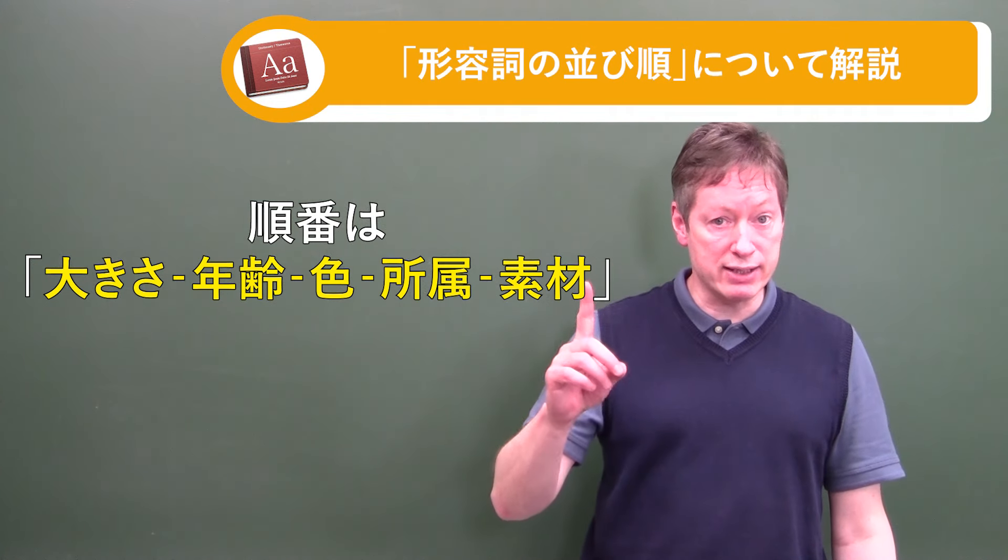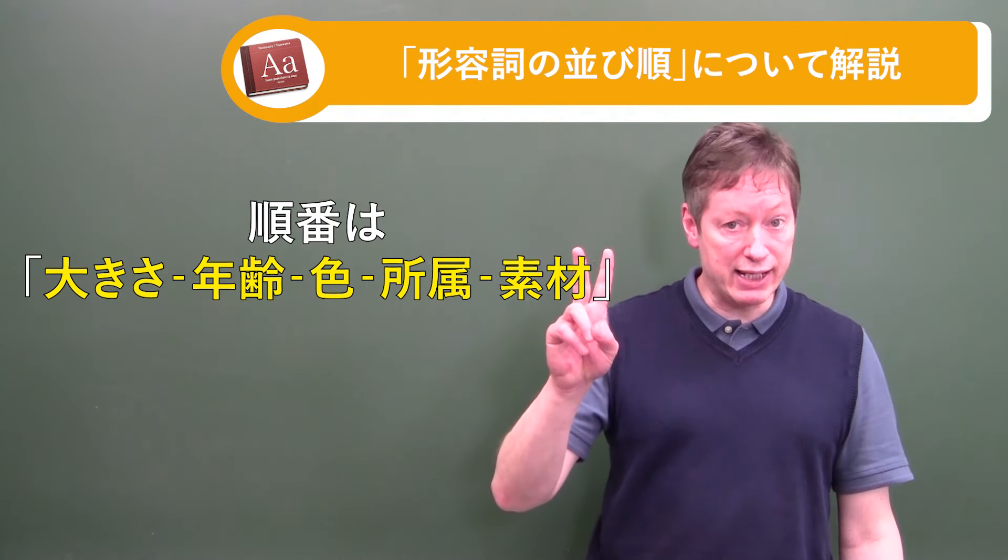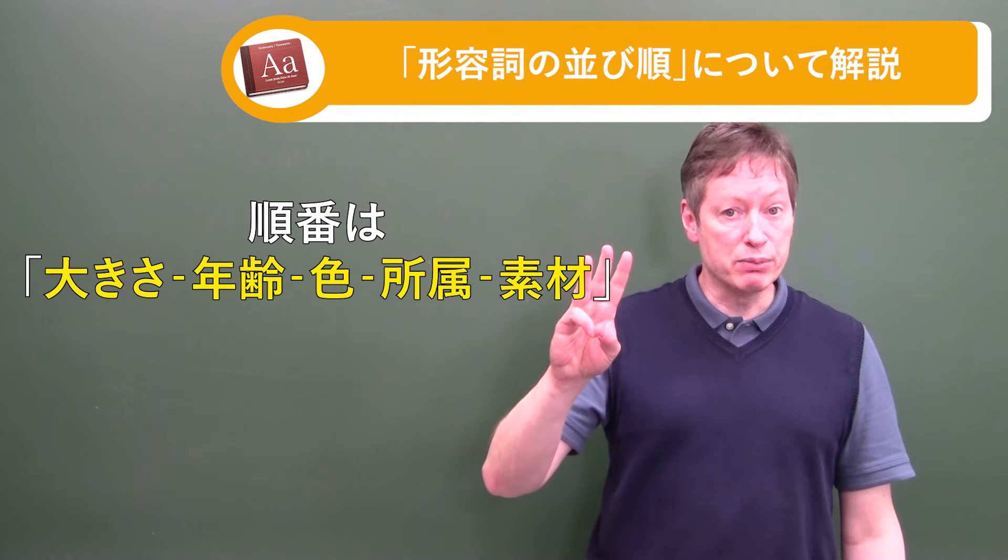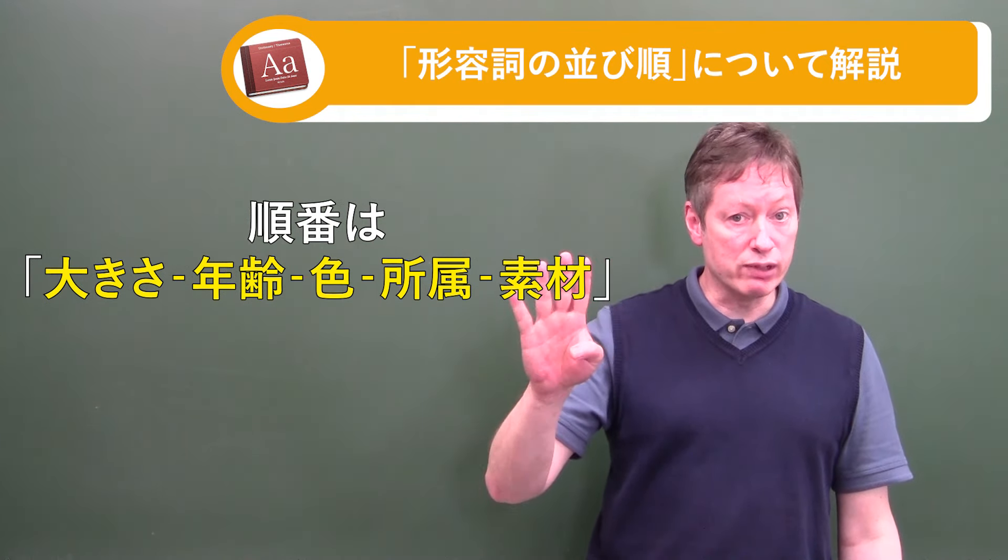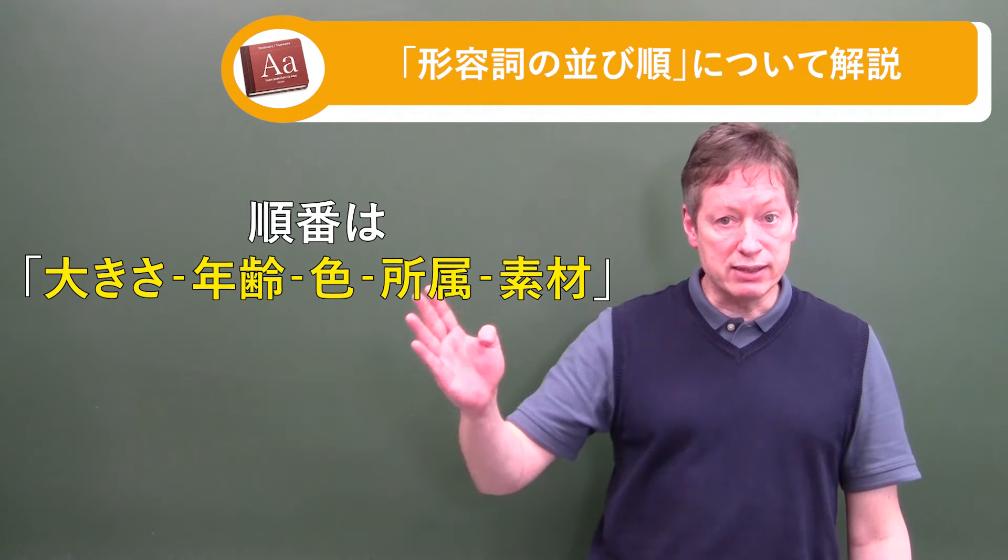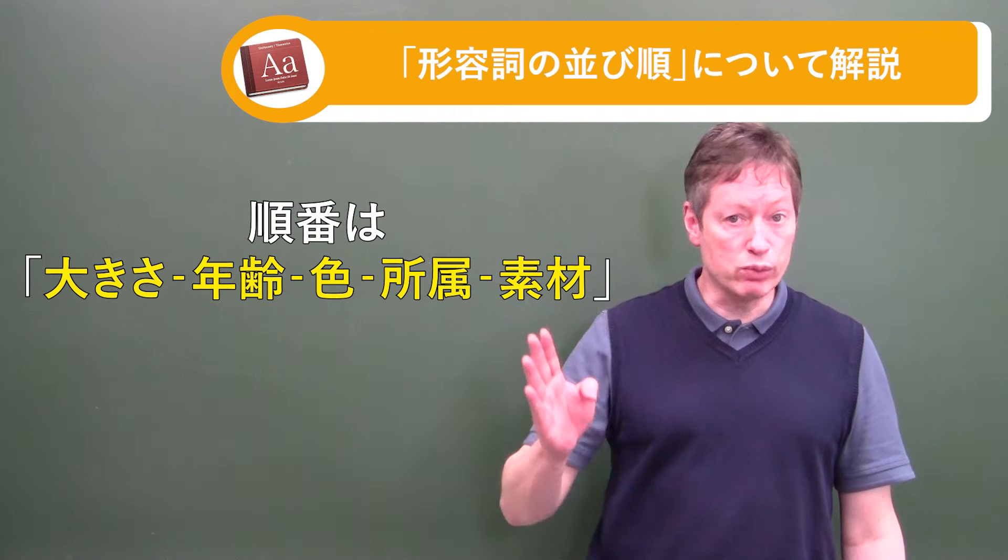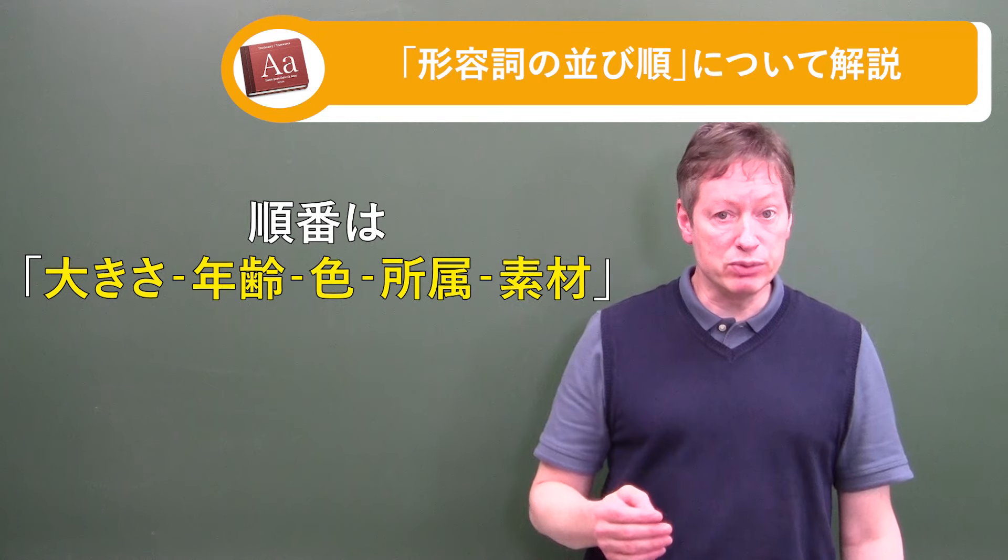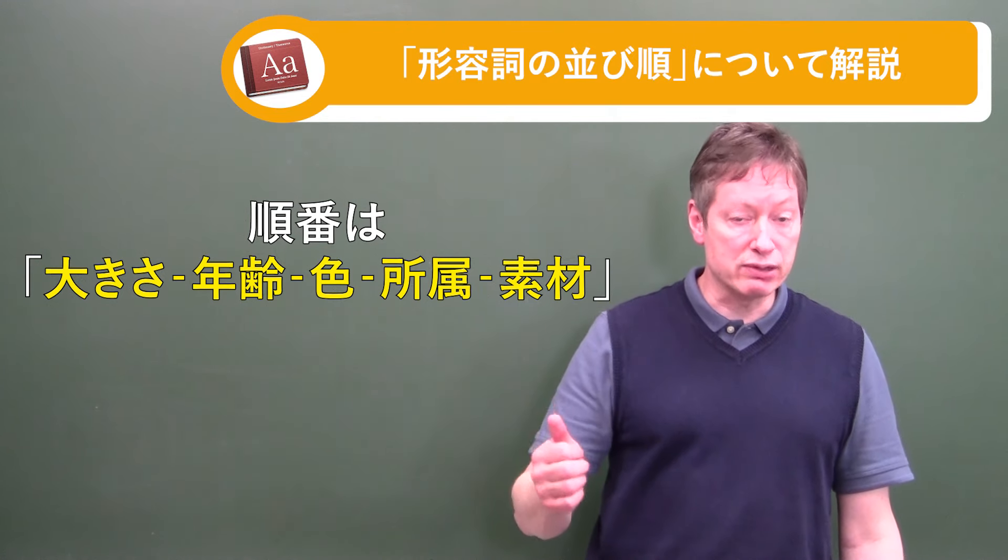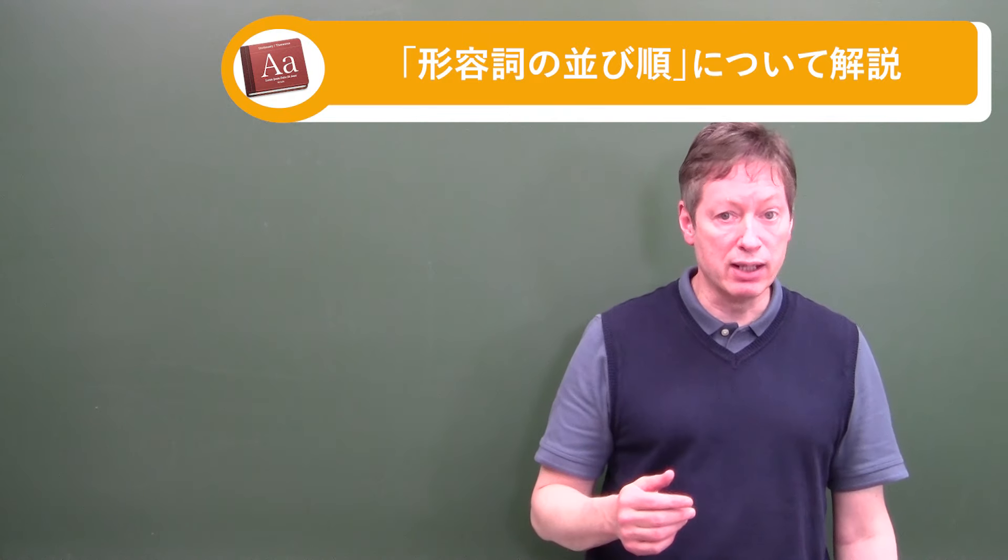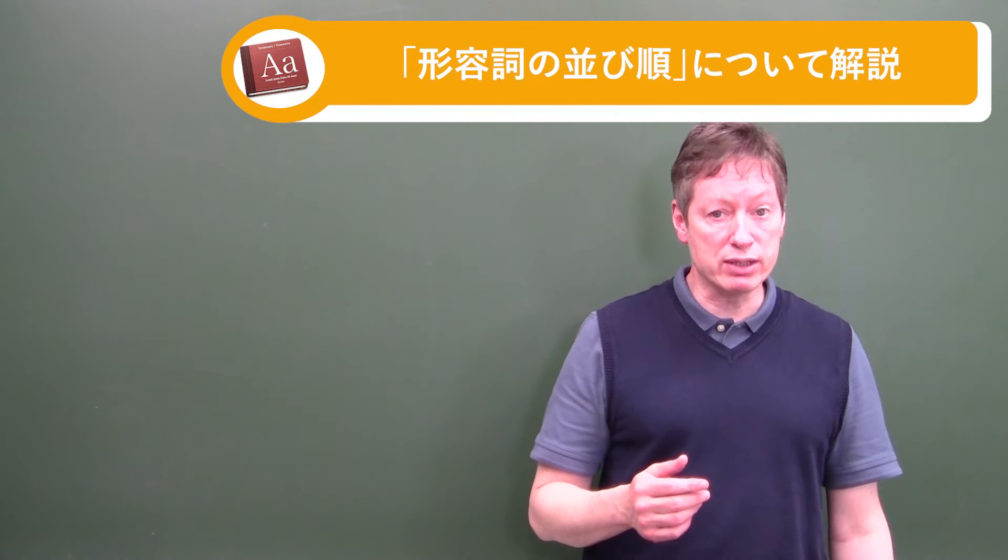So number one, the size. Number two, the age. Number three would be the color. Number four would be the place of origin. Italian, I said, or American or Chinese, the place of origin. Or if it's somewhere in Japan, Okinawan or from Hokkaido. And lastly, would be the material like leather or wood or plastic. I'll work it that way. Just remember the pattern and try to do it the same way.